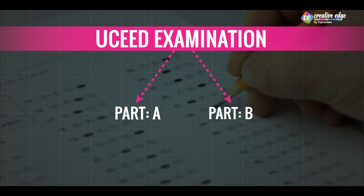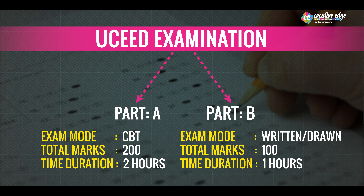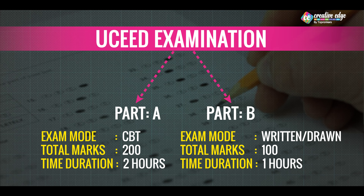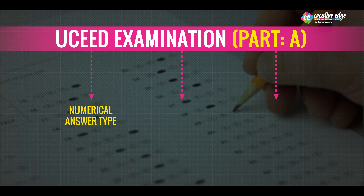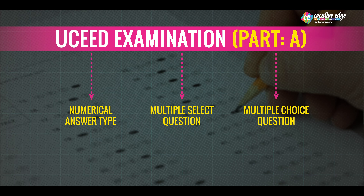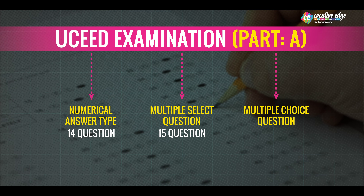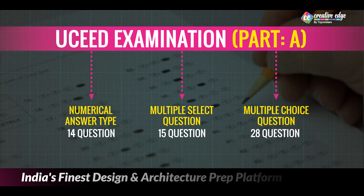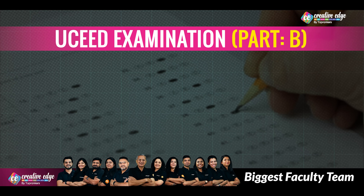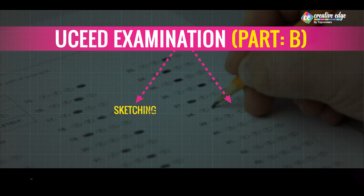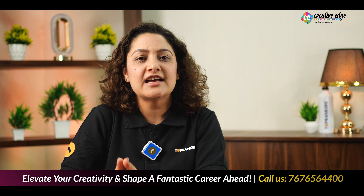Part A is a computer-based examination of 200 marks for 2 hours. Part A is divided into 3 types of questions: numerical answer type, multiple select questions (MSQ), and multiple choice questions (MCQ). This year, there were 14 questions of numerical answer type, 15 questions of MSQ, and 28 questions of MCQ — totalling 57 questions for 200 marks. In Part B, from this year, they have started giving 2 questions: one of sketching and another of design aptitude, each of 50 marks. In today's video, we have discussed all topics briefly.